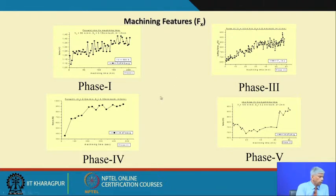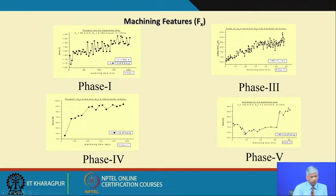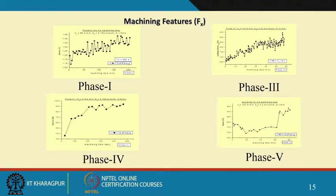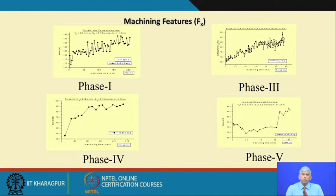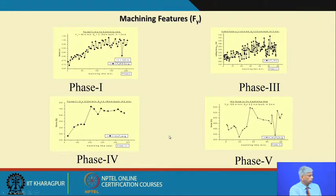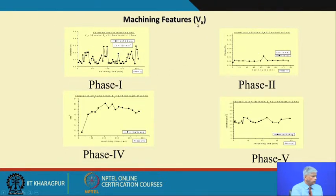Such feature extraction was done, and we measured all the different parameters against machining time — these are all real experimental data. With time, all these parameters increase, subject to experimental variations and errors. Phase 1, Phase 3, Phase 4 were all in different machines and different locations. Lot of study was done to demonstrate that such a system is possible — in the x direction, y direction, and vibration.